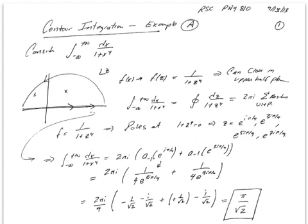So z is equal to the fourth root of negative 1, or e to the iπ/4, 3iπ/4, 5iπ/4, or 7iπ/4. Only the first two, e to the iπ/4 and 3iπ/4, are in the upper half plane. So this integral is 2πi times the residue at e to the iπ/4 plus the residue at e to the 3iπ/4.